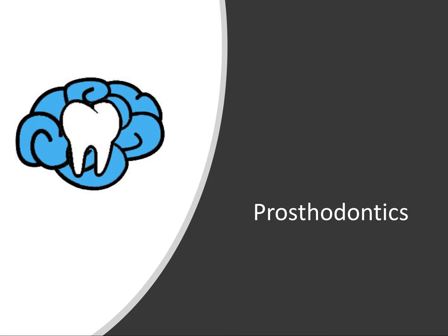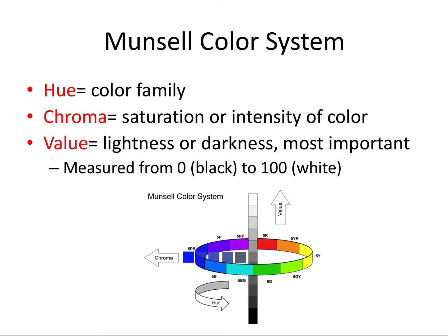The first thing I want to talk about is the Munsell color system, and this color system has three main components: hue, chroma, and value. All three of those are really important to know for the board exam.